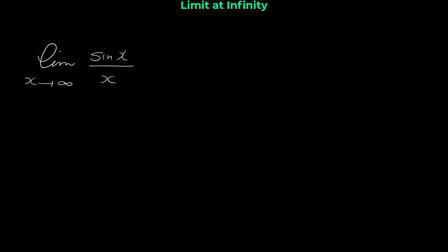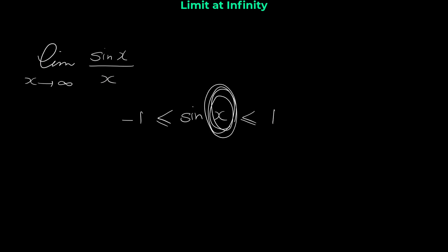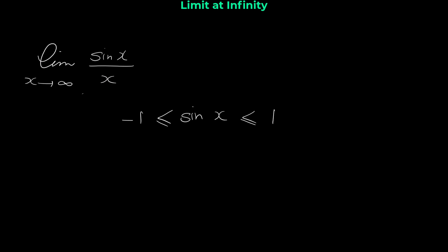So for finding this limit we use the squeeze or sandwich theorem. We start with sine x, and we know that sine x and cosine x are always between negative one and one — they oscillate between negative one and one. It doesn't matter what the angle is: sine of any angle or variable is always between negative one and one, regardless of whether x approaches infinity or any other number.